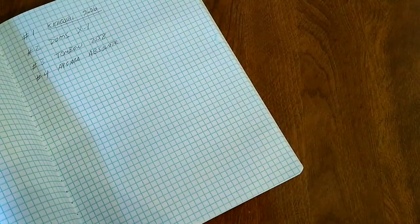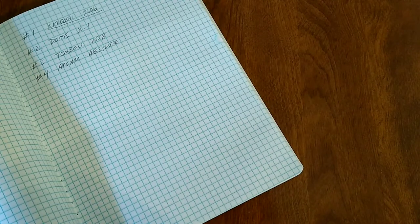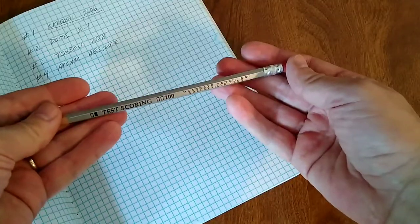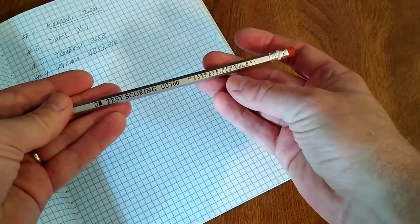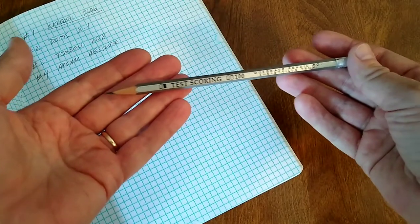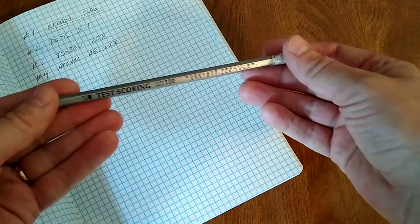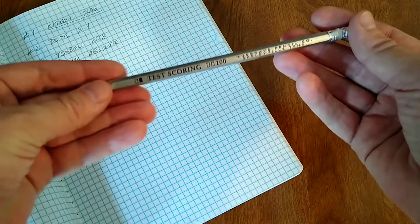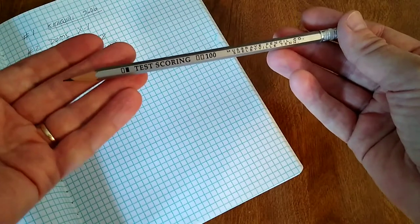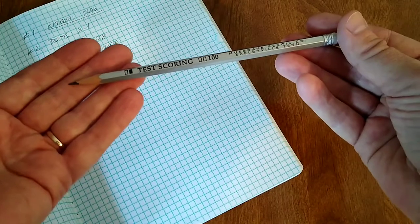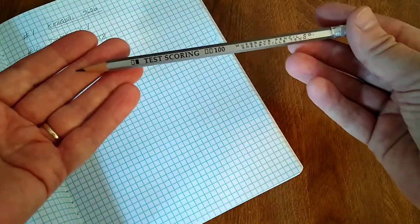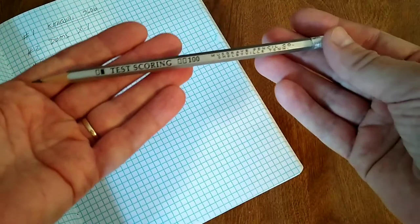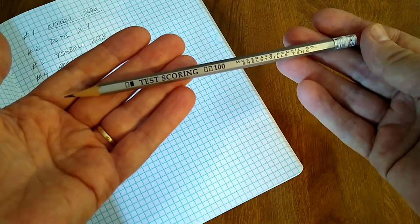And now we're at number five, my number five favorite writing pencil. Finally an American pencil makes the list. This is from the Musgrave pencil company in Shelbyville, Tennessee. This is labeled their Test Scoring 100 pencil, so it's basically marketed as a fill in the dot Scantron test taking pencil. Has a very dark, I believe they call this a synthetic or artificial graphite core. It works just like a really dark graphite to me. It's very dark and very smooth. This one, just the core, is maybe the darkest of all the pencils in my top seven.